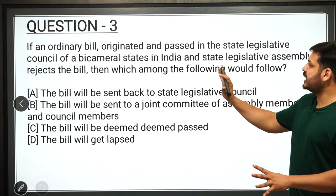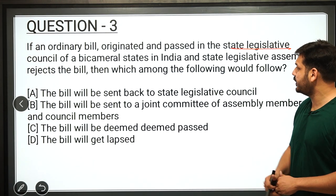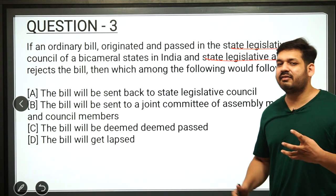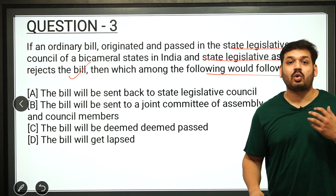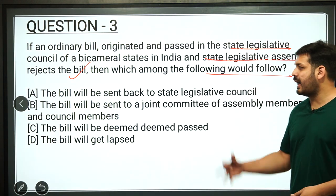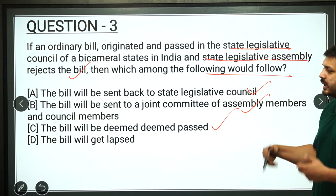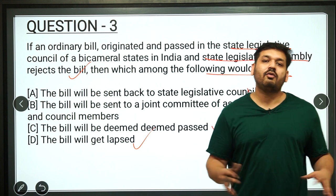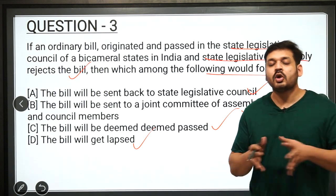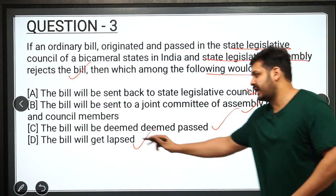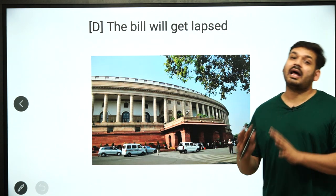The next question is about an ordinary bill. If an ordinary bill originates and is passed in the State Legislative Council, and then the State Legislative Assembly rejects the bill, what will happen? Options include: the Legislative Council will send the bill again; a joint committee of assembly and council members will be formed; the bill will pass; or the bill will lapse. The correct answer is the bill will get lapsed. Remember: if the Council has passed the bill and the State Assembly rejects it, the bill will lapse.